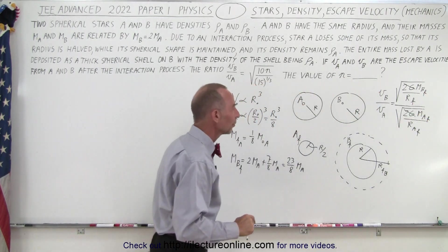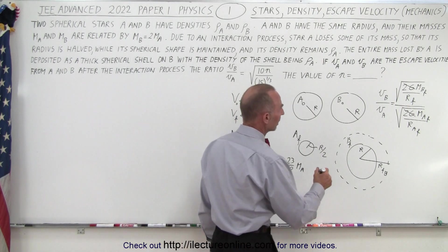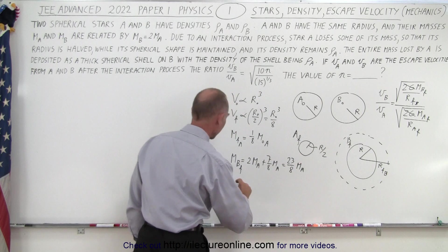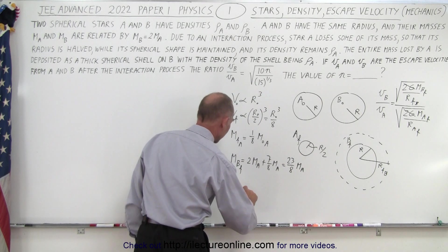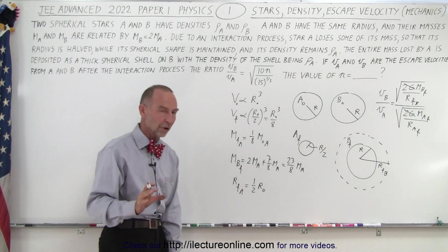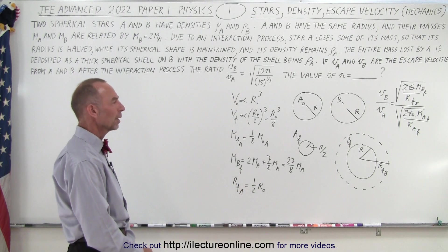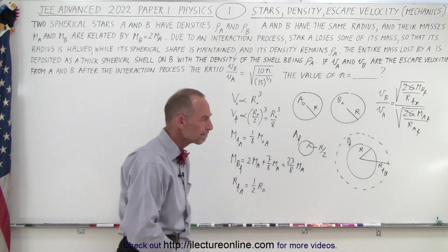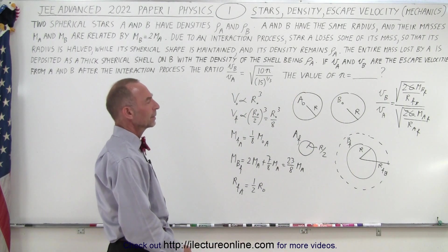So now we have the masses. What about the radius? Well, the radius final for A, I guess this is B right there, so the radius final for A, radius final of A, is equal to 1/2 the original radius. All right, so that's known, that was given. But what about the new radius for B, the final radius for B?